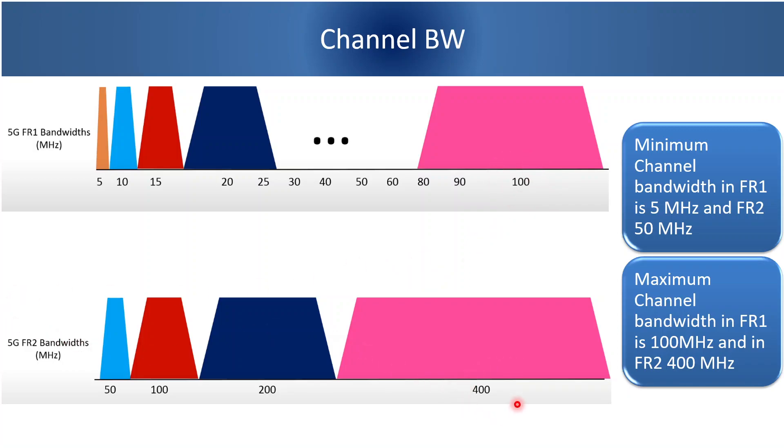If we compare this with LTE 4G, the channel bandwidth supported in 4G LTE is up to 20 MHz. So compared to LTE, channel bandwidth supported in 5G has increased multiple times.